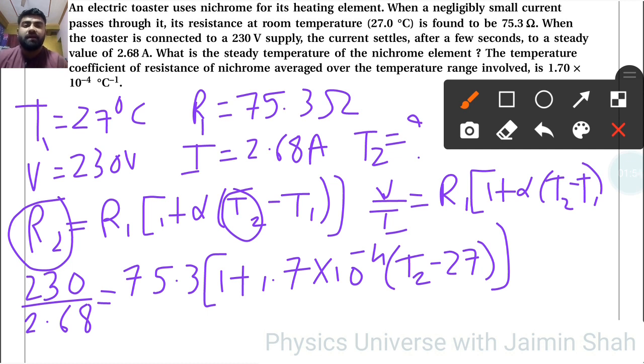We subtract 1 from that value, giving 0.13. Then divide by 1.7×10^-4.